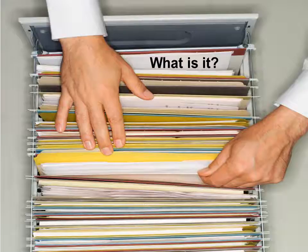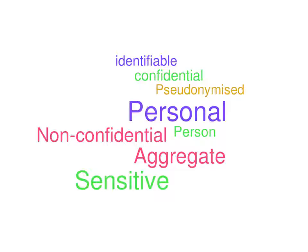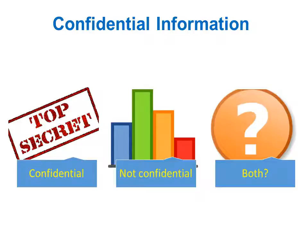So, confidential information — what is it? There are a number of terms used in relation to information and data. People might say it's identifiable, they might say it's confidential. There's personal sensitive data, which are different types of confidential data. And there may be discussions around what is and what isn't confidential information. So is aggregate information confidential? Does it have to be personal level? What if it's pseudonymised? There are lots of different terms that can make it quite confusing to understand what confidential information is and what you might handle.